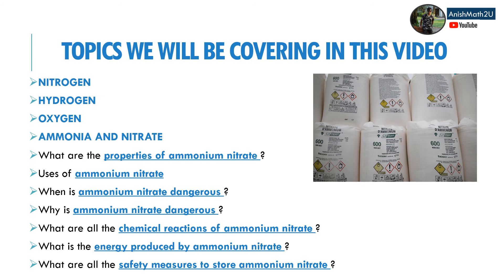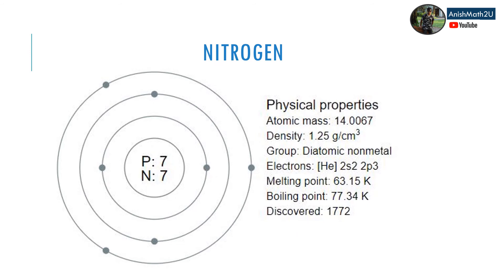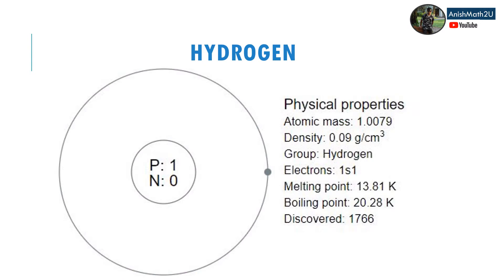Nitrogen physical properties: it has an atomic mass of 14.0067, its density is 1.25 grams per centimeter cubed. It's a non-metal and its electron configuration is 2s2 2p6. Its melting point is 63.15 kelvin and boiling point is 77.34 kelvin. It was discovered in 1772.